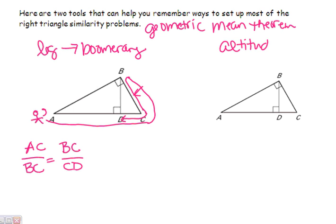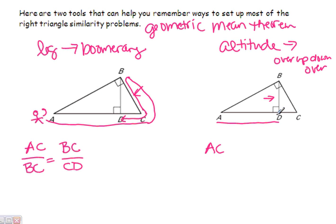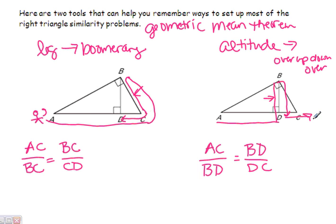When you're dealing with the Geometric Mean Altitude Theorem, we use something called Over, Up, Down, Over — not quite as fun as the boomerang method. What we're interested in is the altitude, which is the geometric mean of the lengths of the two segments. We go over, which gives me AD; then up, which gives me BD; then down, which gives BD again; then over, which gives DC. That's how I set up the ratio. In this method you can start from either side — it doesn't matter because you'll come up with the same answer.